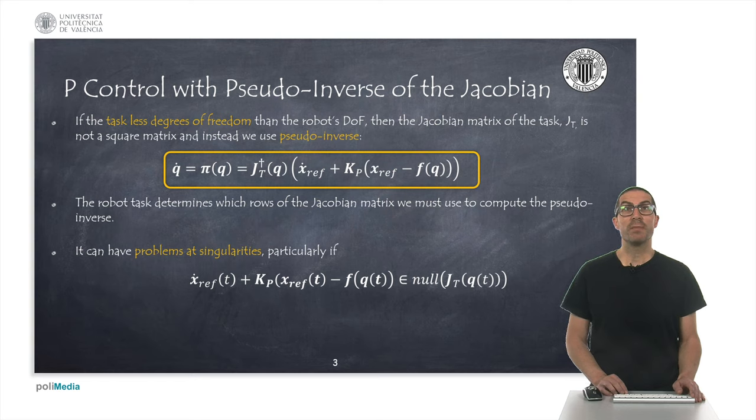As we saw in a previous presentation, the kinematic control of robots can be implemented by means of a proportional control law, which corrects the position and orientation error between the reference and the end effector, including a feedforward term of the reference velocity.